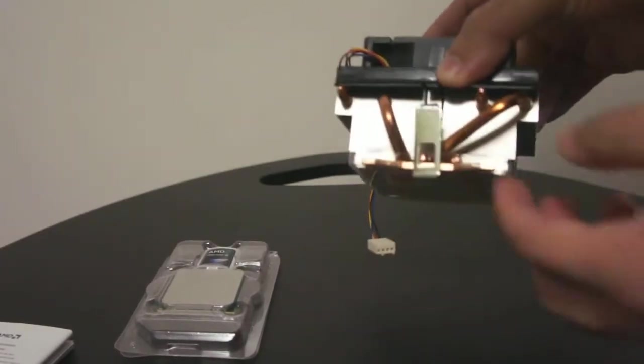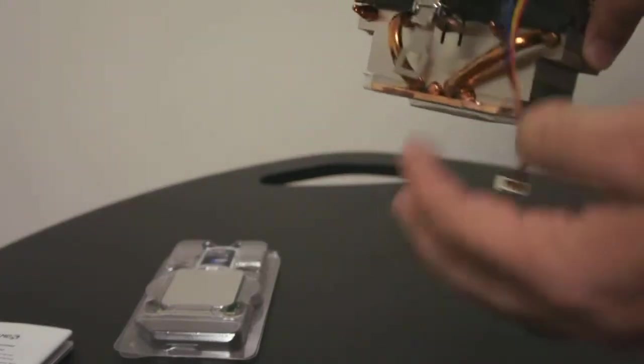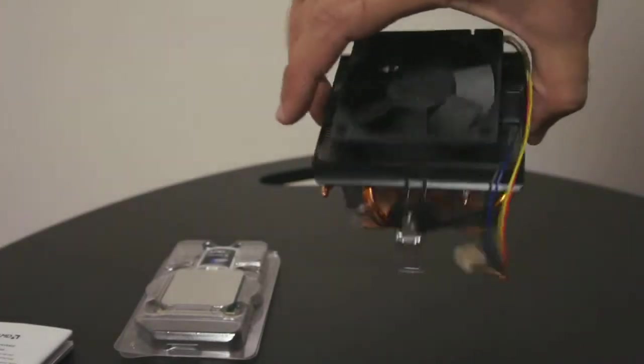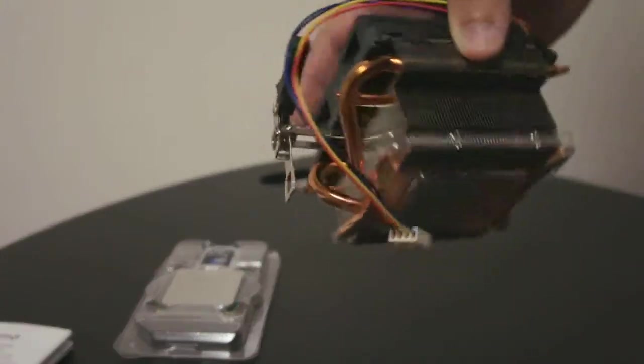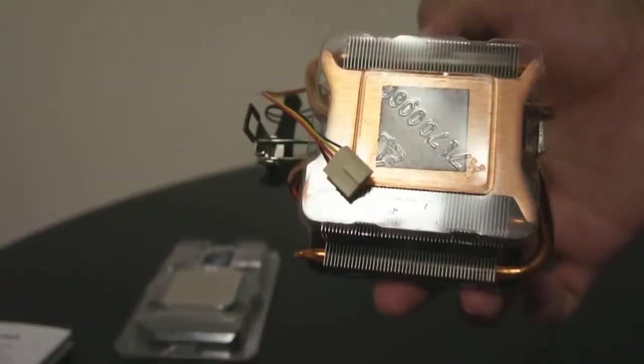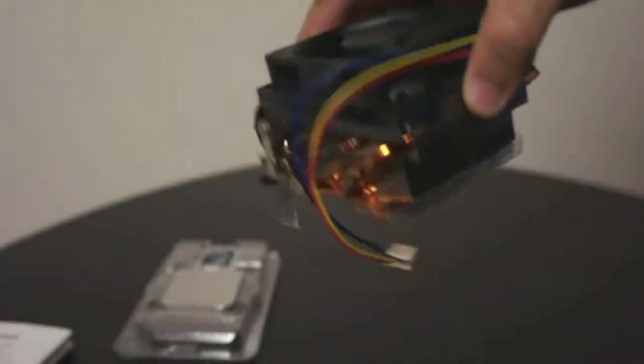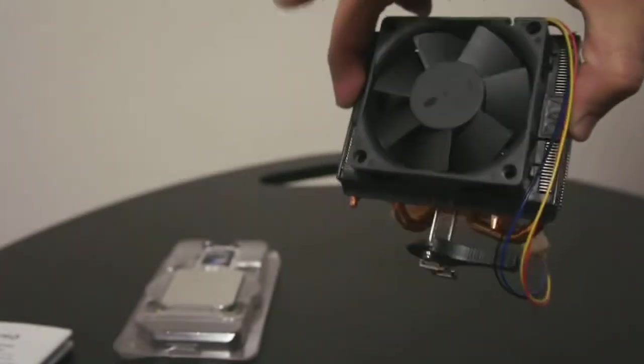It is a heat pipe heat sink. Two heat pipes which will really help with the cooling of this processor. On the bottom, as you can see, it already has a standard thermal paste from AMD. The fan is smaller.